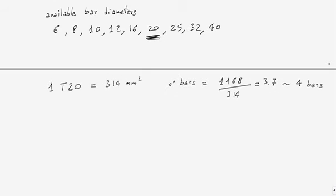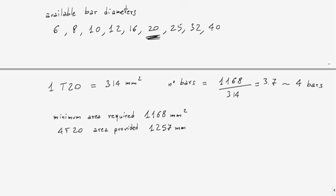The minimum required area is 1168mm². With 4T20 bars, the area provided is 1257mm², which is 314 times 4. The area provided always needs to be greater than the minimum area required.